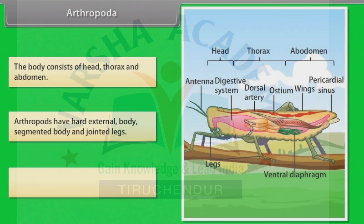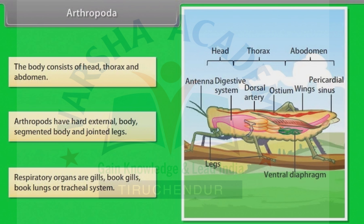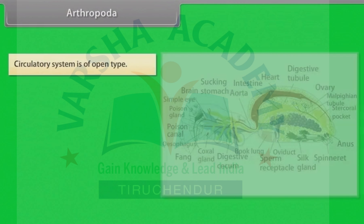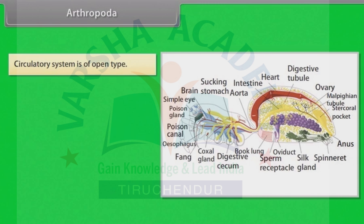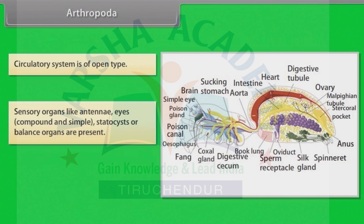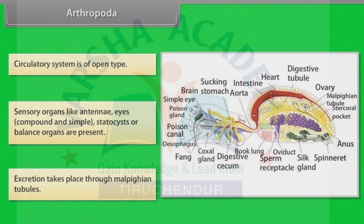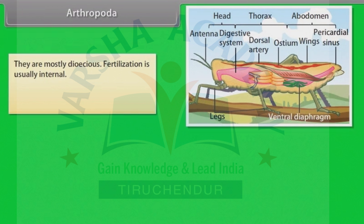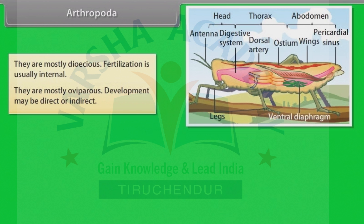Arthropods have a hard external body, segmented body and jointed legs. Respiratory organs are gills, book gills, book lungs or a tracheal system. Circulatory system is of open type. Sensory organs like antennae, eyes (compound and simple) and statocysts, or balance organs, are present. Excretion takes place through Malpighian tubules. They are mostly dioecious. Fertilization is usually internal. They are mostly oviparous. Development may be direct or indirect.